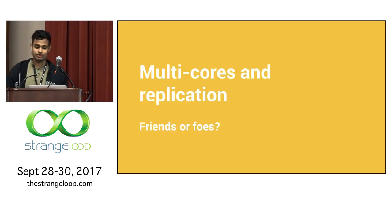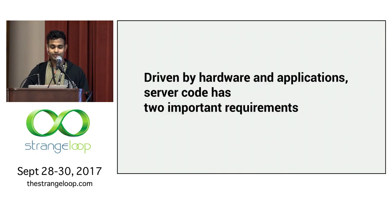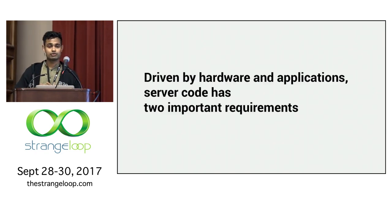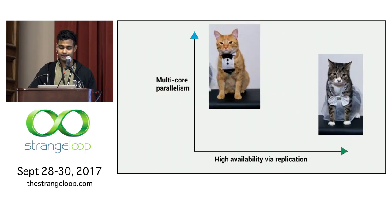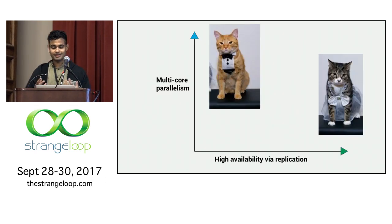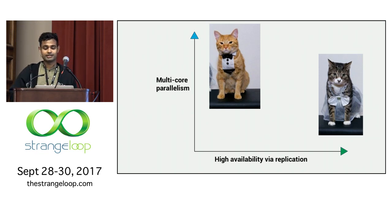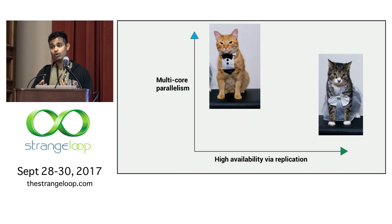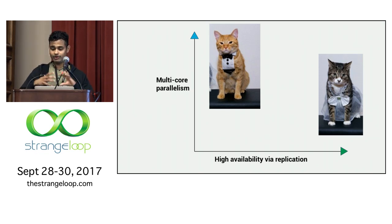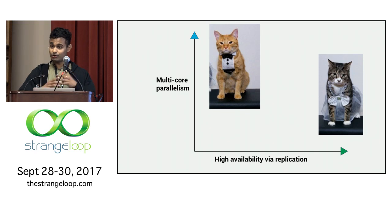Let's dive straight into background on multicore and replication. Driven by hardware and applications, server code today has two important requirements. The first is that it must exploit multicore parallelism, and the second is that it must support high availability via replication. In any given deployment of server code, we want to marry solutions to both these requirements together — they need to coexist.